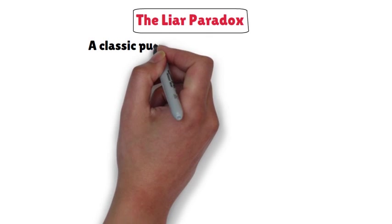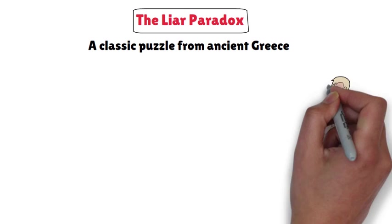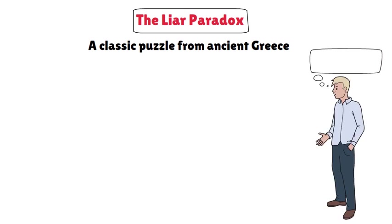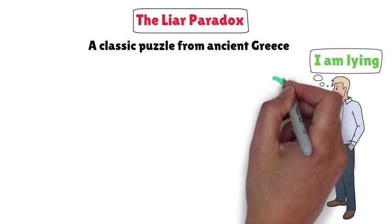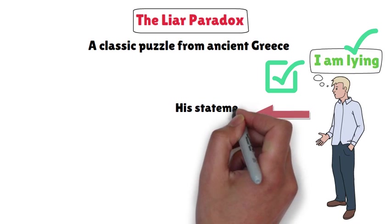The Liar Paradox, a classic puzzle from ancient Greece, presents a seemingly simple yet baffling scenario. A man claims he is lying. If his statement is true, then he must be lying, which means his statement is false.